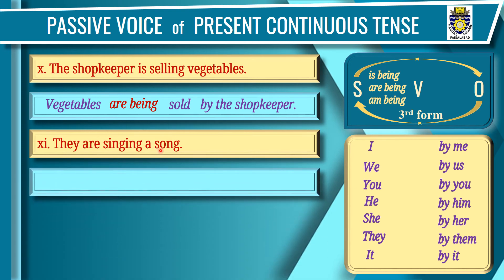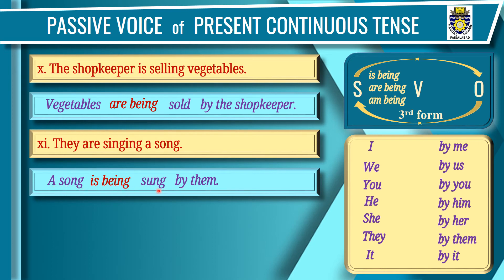Sentence 11: 'They are singing a song.' Subject: 'they'; verb: 'are singing'; object: 'a song'. Step one: 'a song' at the beginning. Step two: 'they' changes to 'by them'. Step three: third form of 'singing' is 'sung'. Step four: 'a song' is singular — write 'is being' — 'A song is being sung by them'.